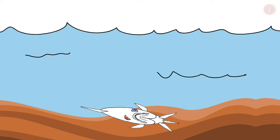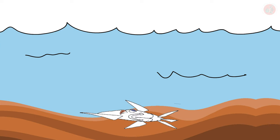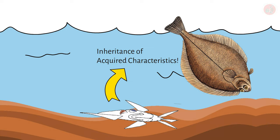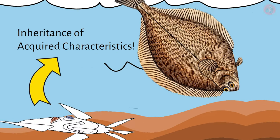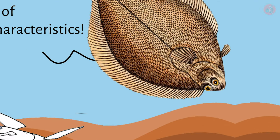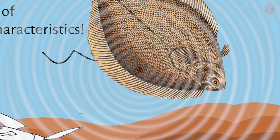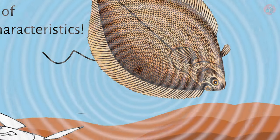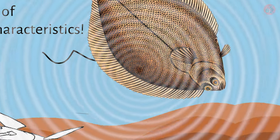Gradually, those shifting one eye to the opposite side increased. This acquired trait continued to be inherited, leading to the modern flounder. The flounder, therefore, became a fish that sowed considerable confusion in the field of evolutionary biology.